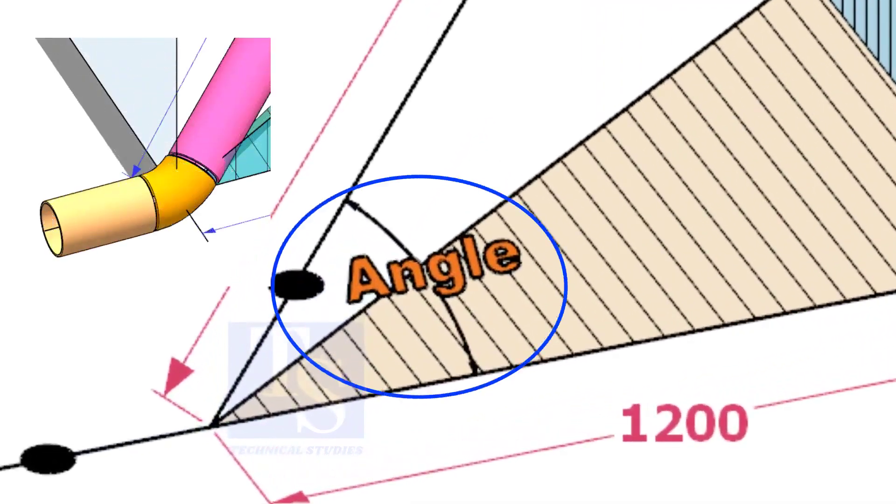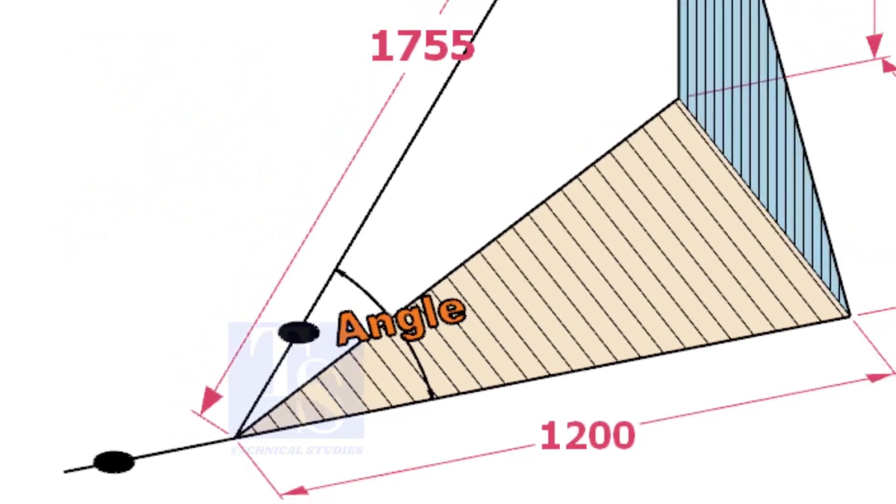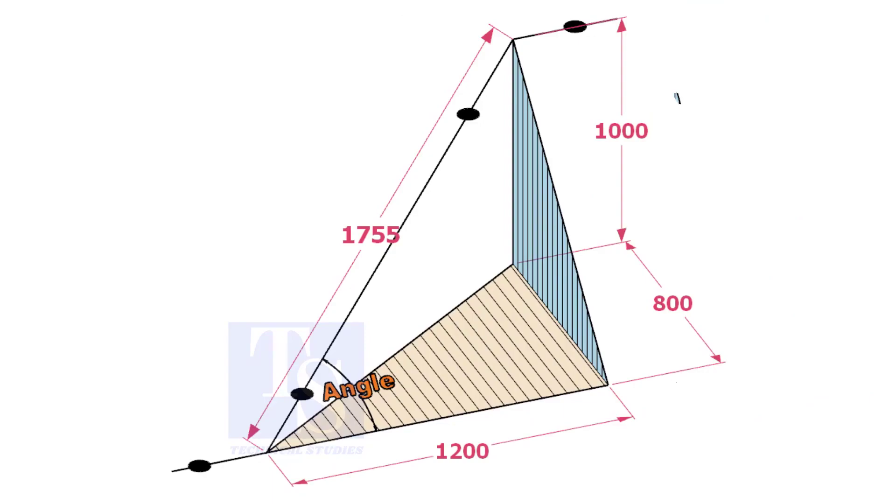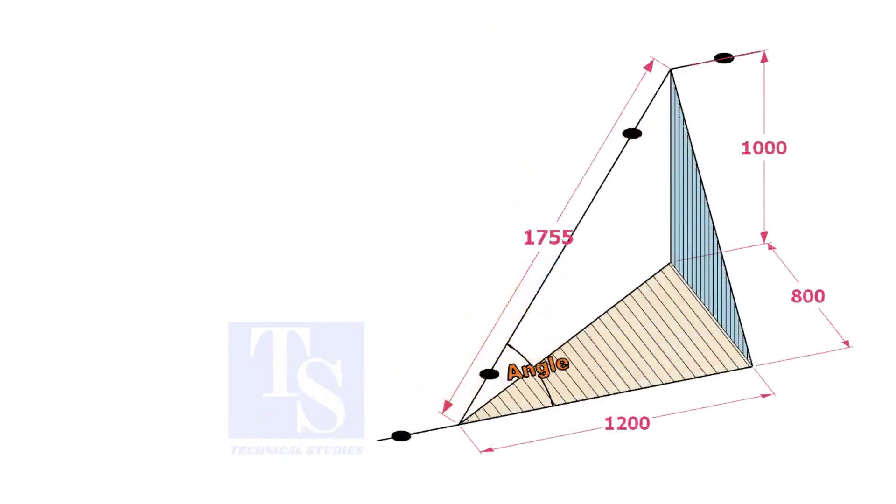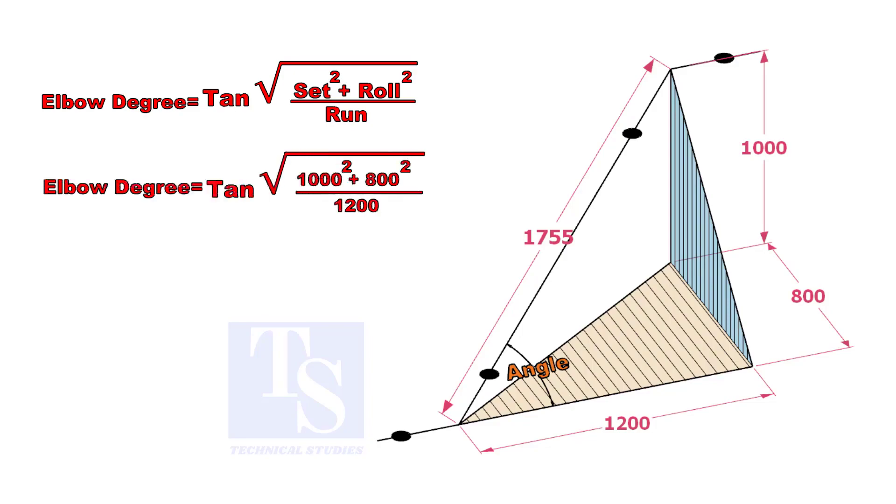Let us calculate the degree of the elbow or the including angle. The formula is the square root of set squared plus roll squared divided by run, into tan inverse.